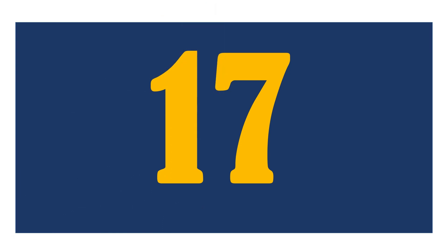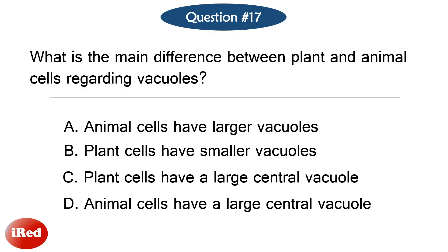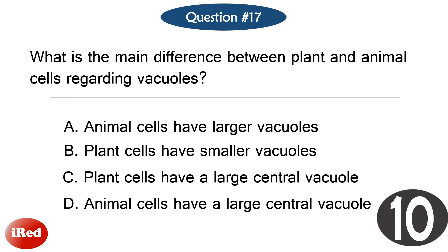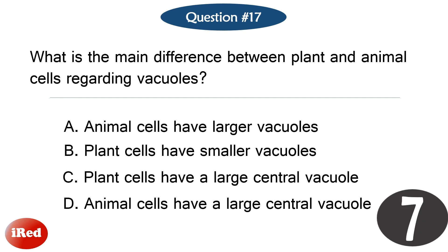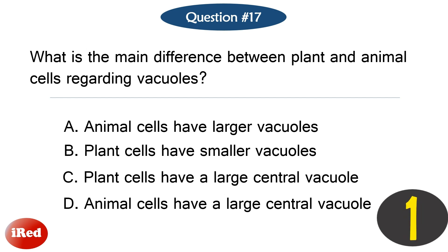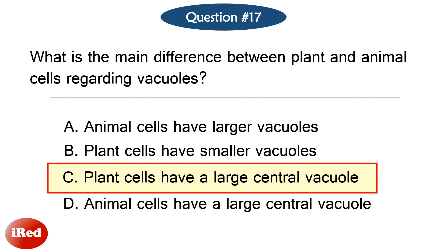Question number seventeen. What is the main difference between plant and animal cells regarding vacuoles? The correct answer is letter C, plant cells have a large central vacuole.